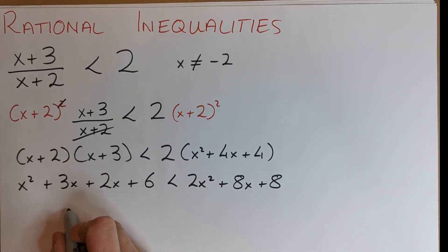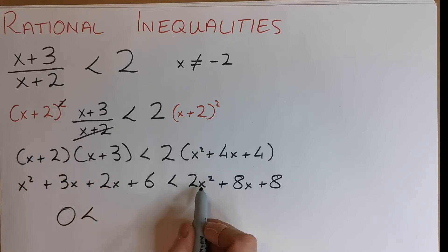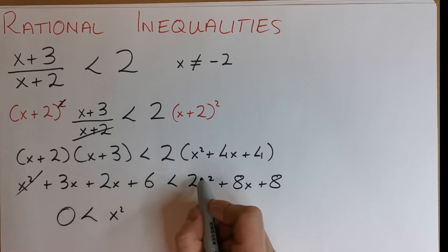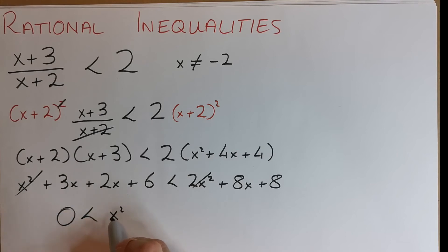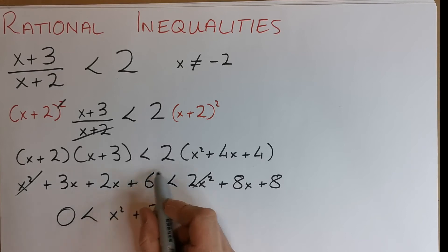Zero less than what? When x squared comes over, 2x squared minus x squared is just x squared. 3x and 2x is 5x, 5x comes over. 8x minus 5x is going to be plus 3x. 6 comes over, 8 minus 6 is plus 2.